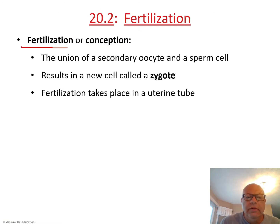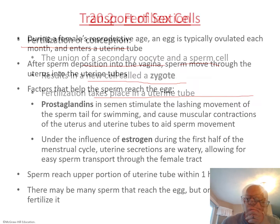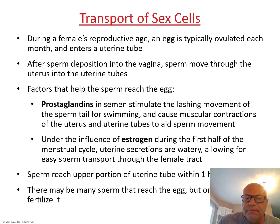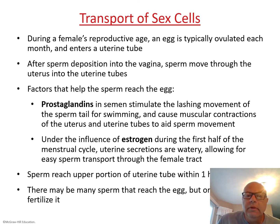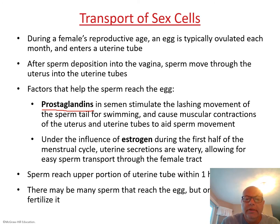Fertilization or conception is when the secondary oocyte, which is the egg, and the sperm meet, and the first cell formed is called a zygote. This almost always takes place in the uterine tube. The egg is ovulated during the middle of the cycle, enters the tube, and the sperm swim into the tube to reach the egg. The hormone prostaglandins, found in semen, cause the sperm tail to thrash about.